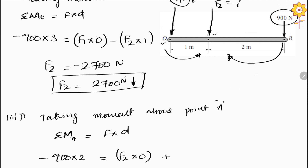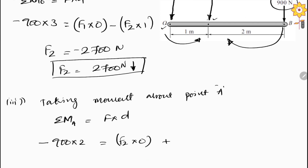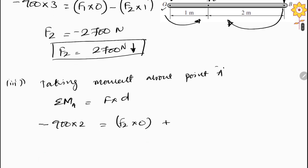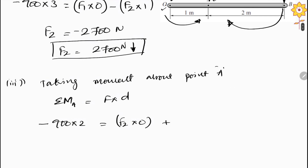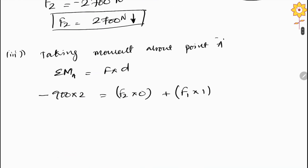F1 is acting in an anticlockwise direction, so it is positive: F1 into 1 meter. From this equation, F1 will be equal to minus 1800 newton.